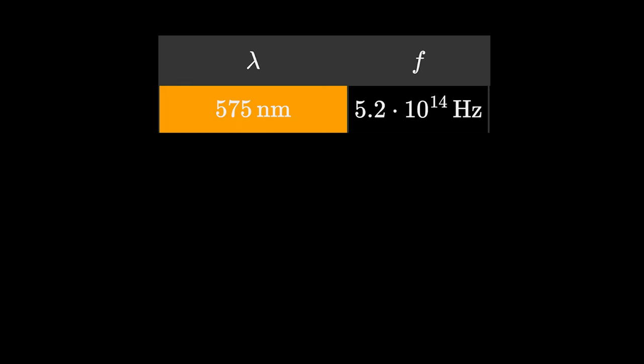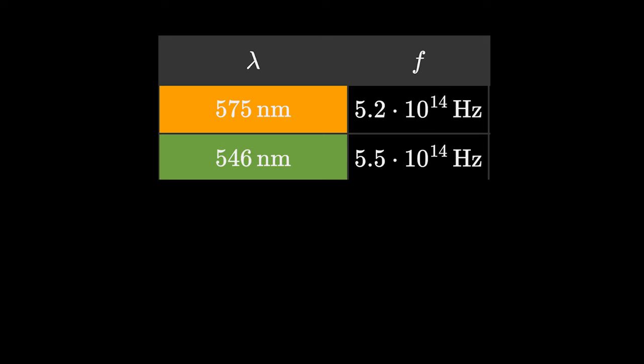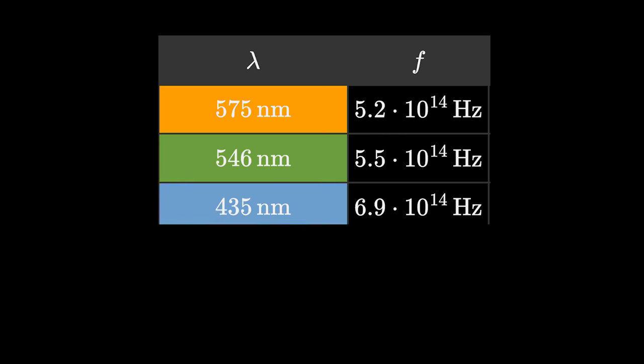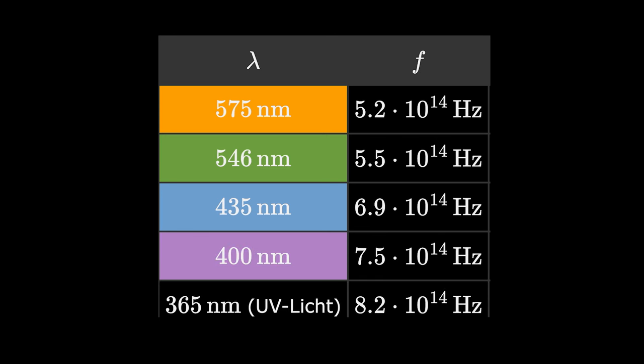Yellow light in the range of 575 nanometers. Green light in the range of 546 nanometers. Blue light at approximately 435 nanometers. Violet light at 400 nanometers. And starting at around 365 nanometers, UV light begins, which we cannot see with the naked eye.